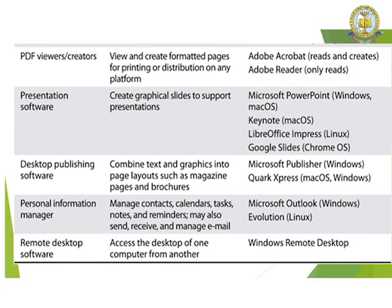Desktop publication software combines text and graphics into a page layout such as magazine pages or brochures. Examples include Microsoft Publisher, QuarkXPress, Mac OS, and Windows. Personal Information Manager, or PIM, is used to manage contacts, calendars, tasks, notes, and reminders, and may also send and receive messages and manage emails. Examples are Microsoft Outlook and Linux. Remote desktop software allows you to access the desktop of one computer from another computer, such as Windows Remote Desktop.